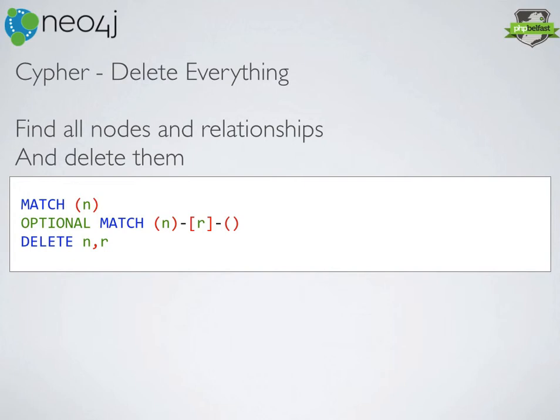Here's a useful little query to run when you're playing around: MATCH n, OPTIONAL MATCH n-[r]-(), DELETE n, r. That essentially deletes all nodes and all relationships — a quick and dirty way to truncate your database. Be aware though: although it deletes your nodes and relationships, it doesn't delete your labels. So where you did CREATE p:person, the label 'person' will still exist within your database.